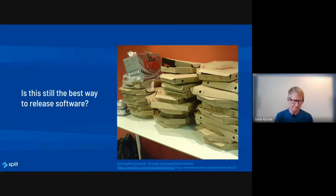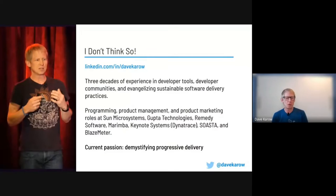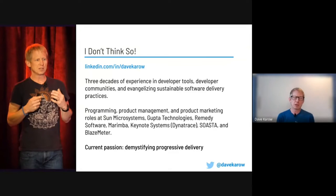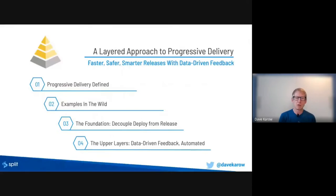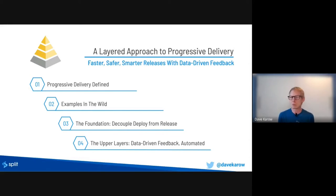Things are going to go wrong, and I don't think that's the right way to release software anymore. That's why I want to give this talk tonight on progressive delivery — demystifying it, but also going a little deeper to help people understand the value-add layers on top of the fundamental practice. What I call a layered approach to progressive delivery. We'll start by defining progressive delivery, give two examples in the wild, then build up from the foundation layer — decoupling deploy from release — to the upper layers: automating data-driven feedback to make releases more boring, more routine, and more informative.